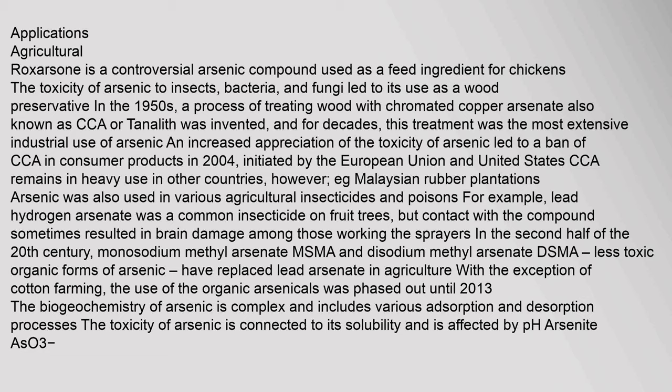Arsenic was also used in various agricultural insecticides and poisons. For example, lead hydrogen arsenate was a common insecticide on fruit trees, but contact with the compounds sometimes resulted in brain damage among those working the sprayers in the second half of the 20th century. Monosodium methyl arsenate (MSMA) and disodium methyl arsenate (DSMA), less toxic organic forms of arsenic, have replaced lead arsenate in agriculture with the exception of cotton farming. The use of organic arsenicals was phased out until 2013.